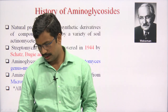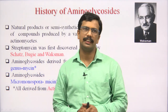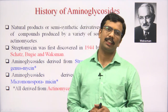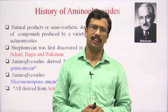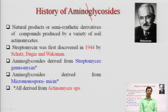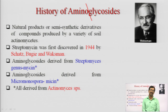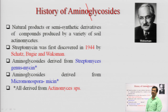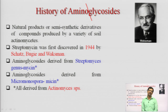As the word suggests, aminoglycoside is made up of two parts: amino and glycoside. It consists of one or two amino groups which are connected with glycosidic linkage. They are available in the form of natural as well as semi-synthetic or synthetic analogs.